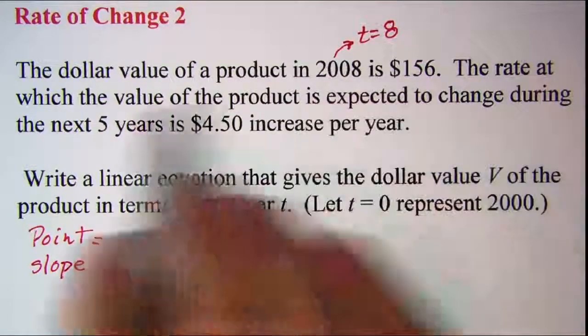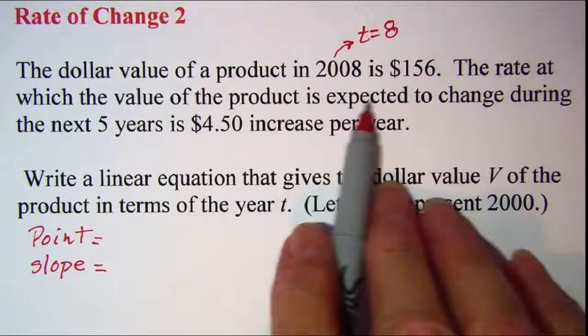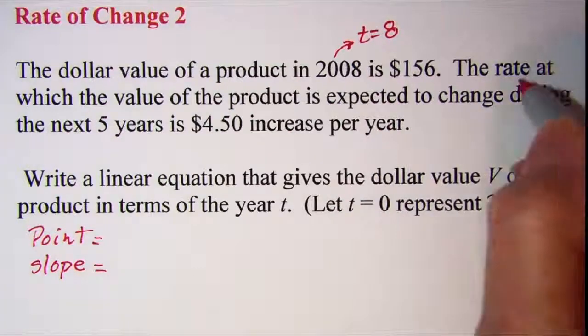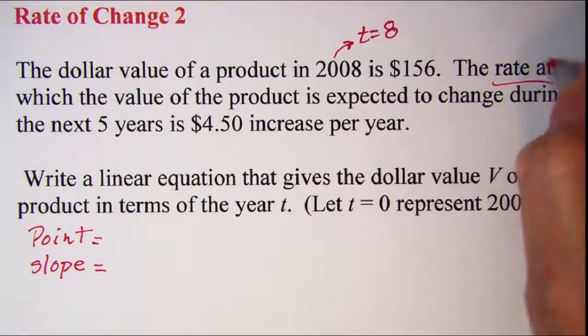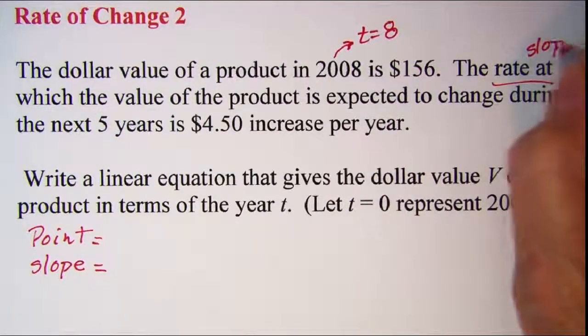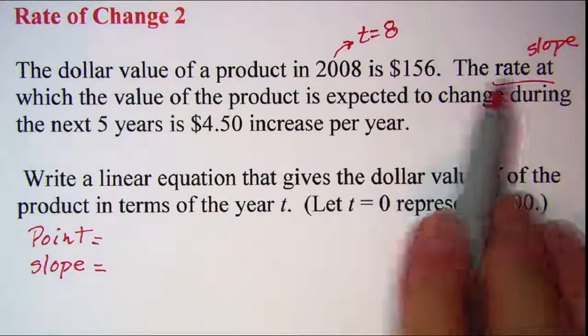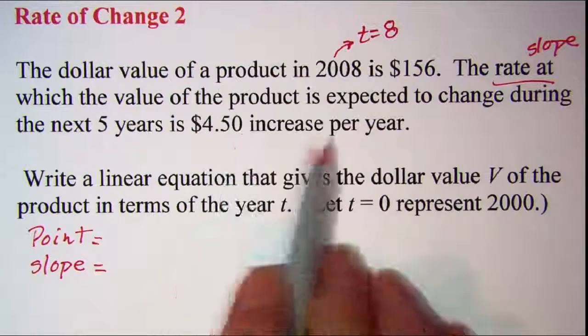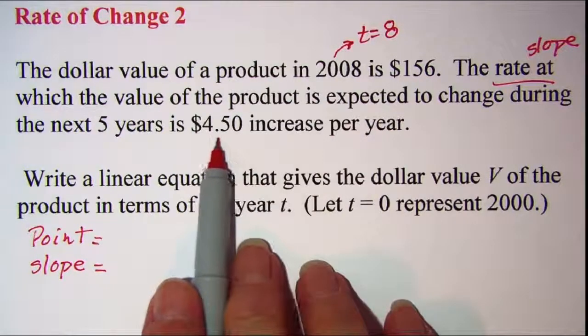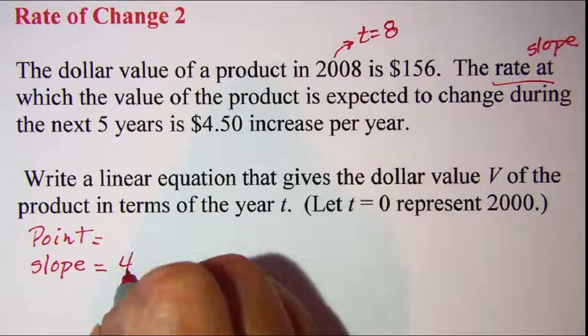Also, the rate at which the product is expected to change - rate of change is always our slope. So we can write immediately then that the slope is, and since it's increased it's going to be a positive number, the slope is 4.50.